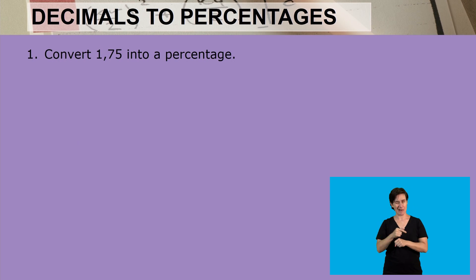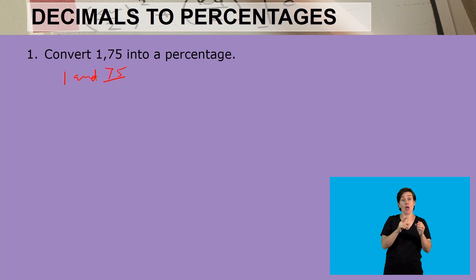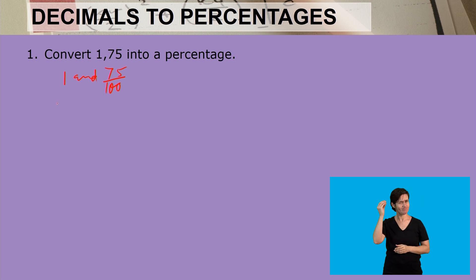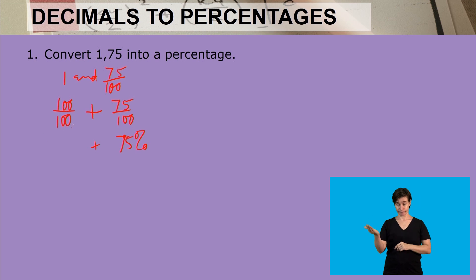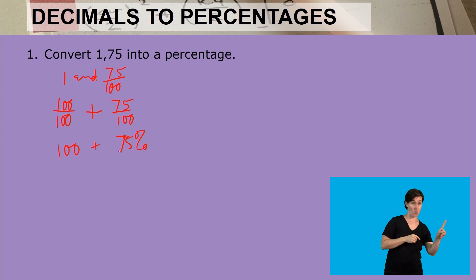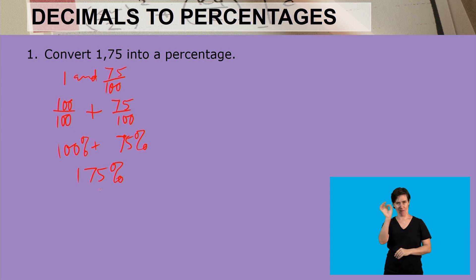Our first example: convert 1.75 into a percentage. So 1 is a whole and 75 divided by 100 is the fraction. So when we write it, we remember that 1 is a hundred divided by a hundred, plus 75 divided by a hundred. Because it's divided by a hundred, it becomes 75%. And the other part, because it is a hundred already, that makes it a hundred percent. So one hundred percent plus 75% gives us one hundred and seventy-five percent.